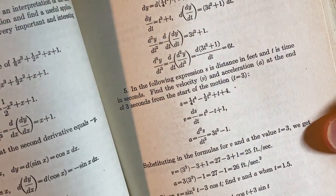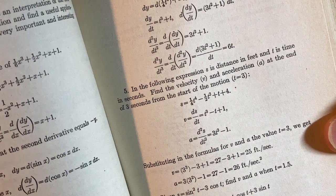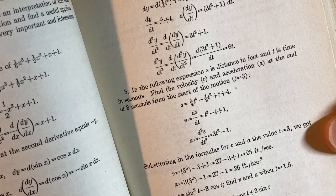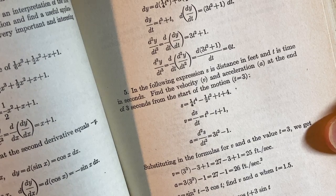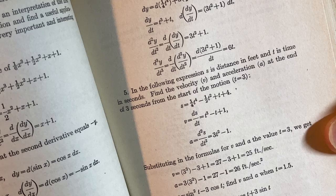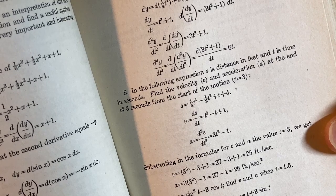In the following expression, S is distance in feet and T is time in seconds. Okay. Find the velocity V and acceleration A at the end of three seconds from the start of the motion T equals three. Right.